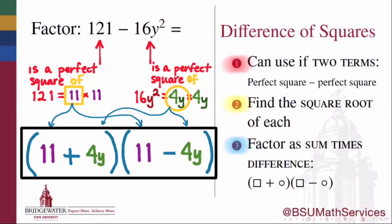And we've now factored 121 minus 16y squared as the product of the sum of the square roots of those terms times the difference of the square roots of those terms, the quantity 11 plus 4y times the quantity 11 minus 4y.